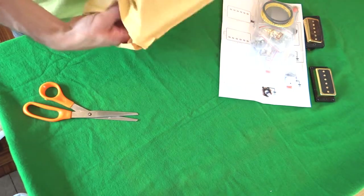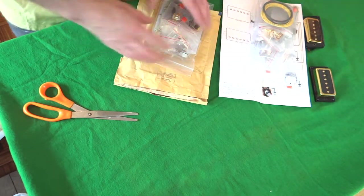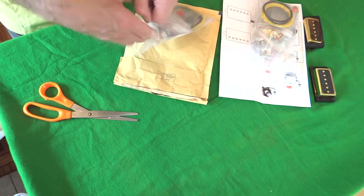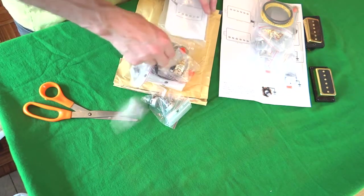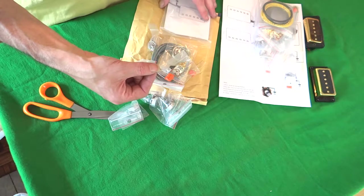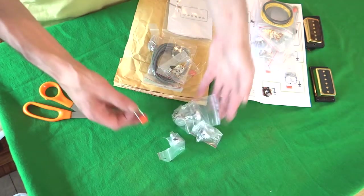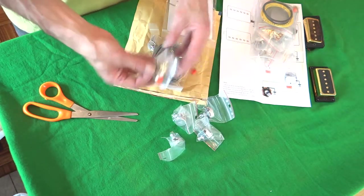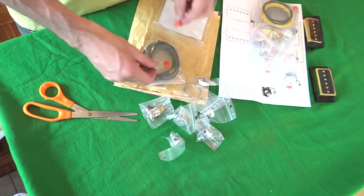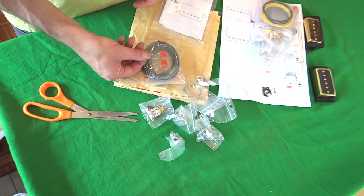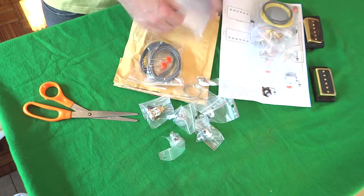Now the other one is exactly the same as the one I just showed you, except... So this set is exactly like the other set, with one exception. These ones are the 47, they say 473. You've got to have good eyesight to see that. So again, four pots, one switch, one jack socket, some solder, wires for idiots. And the capacitors this time are 473, deeper cutting. And of course you get a diagram.